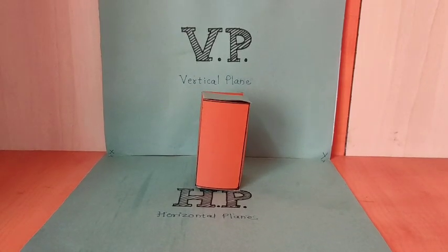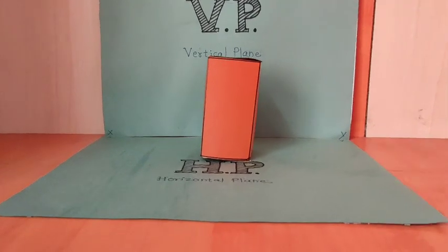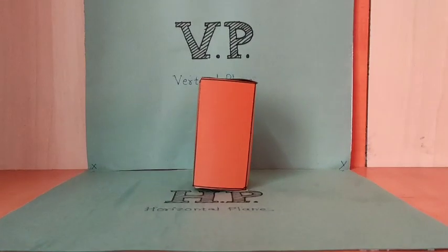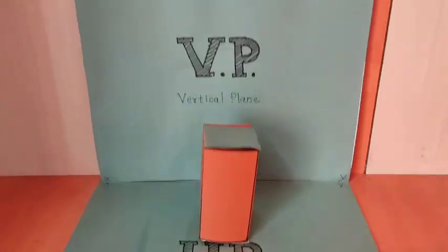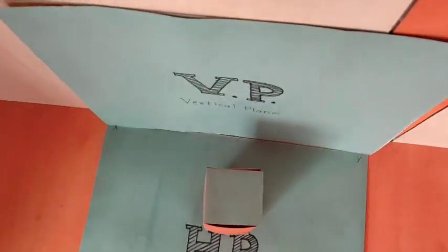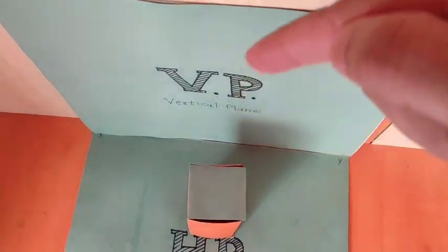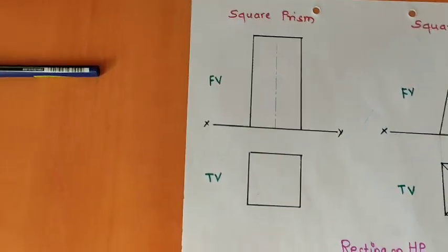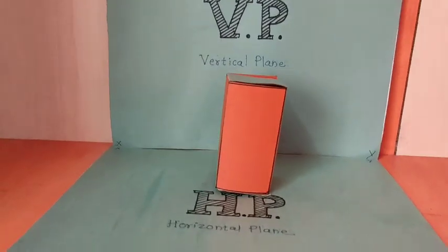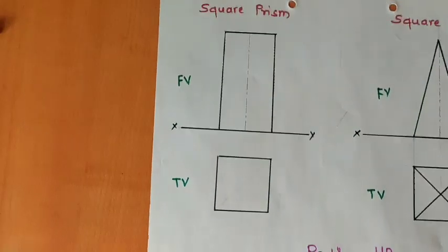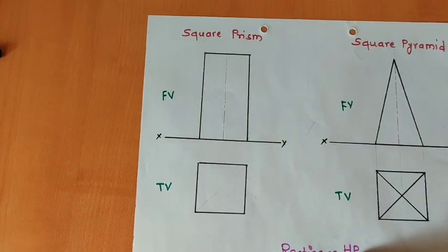This is a square prism resting on HP. In the front view, we will be able to see a rectangle above XY. In the top view, you will be able to see a square in front of VP, or below XY. In the front view rectangle above XY, and in the top view a square below XY.